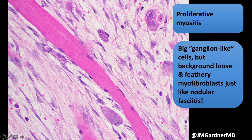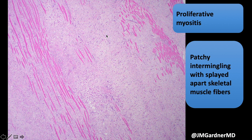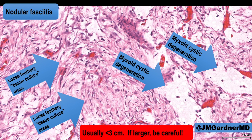What's really helpful is if you see skeletal muscle fibers suspended in the loose fasciitis background along with scattered ganglion-like cells. This pattern of patchy intermingling of splayed-apart, sometimes atrophic skeletal muscle with intervening tissue that looks like fasciitis and scattered ganglion-like cells is very reassuring for proliferative myositis from low power. Start at low power — don't go straight to high power or you'll alarm yourself.